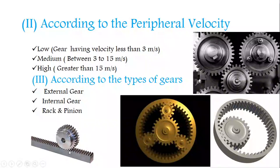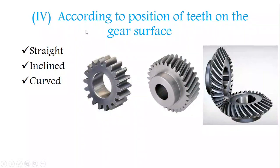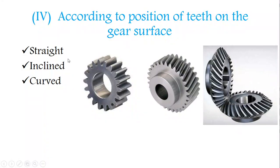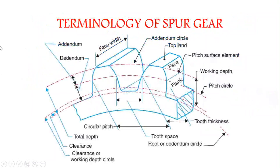According to the position of teeth on the gear surface, gears are classified into three types: straight, inclined, and curved. The spur gear has straight teeth. The helical gear has inclined teeth. The spiral gears have curved teeth. These are the classifications depending on the tooth position on the gear surface.